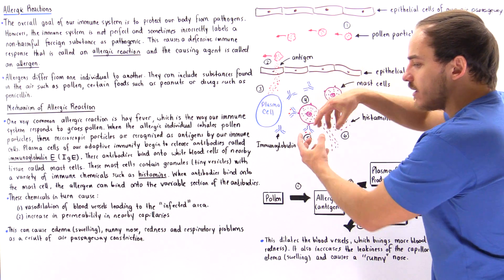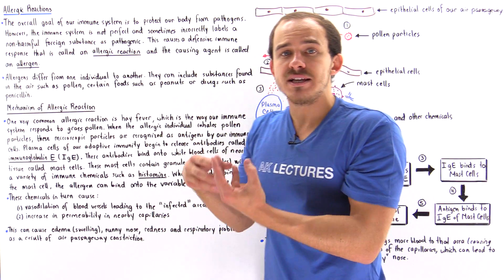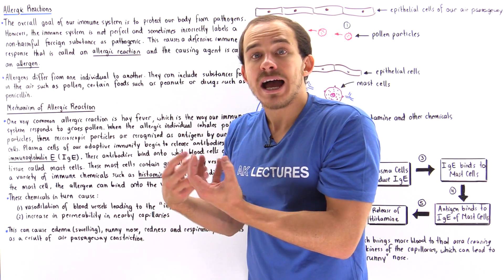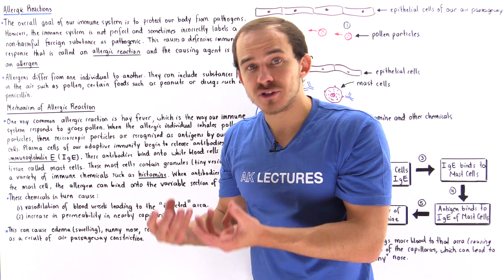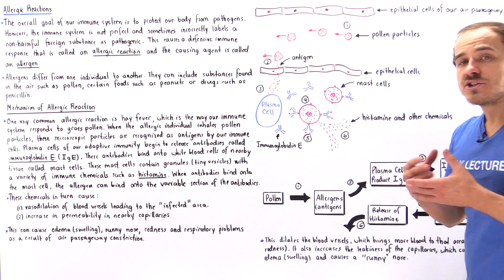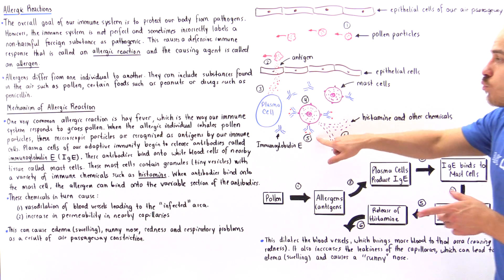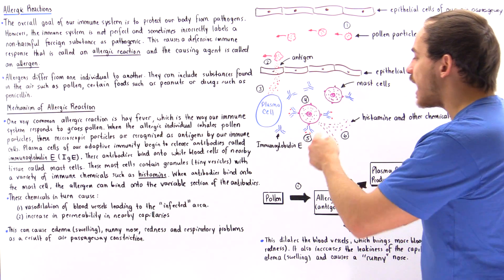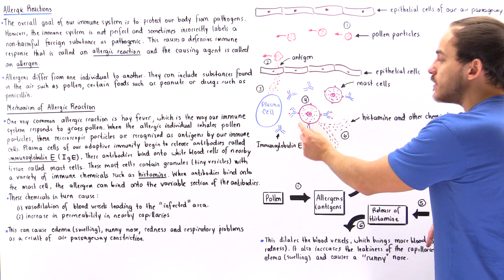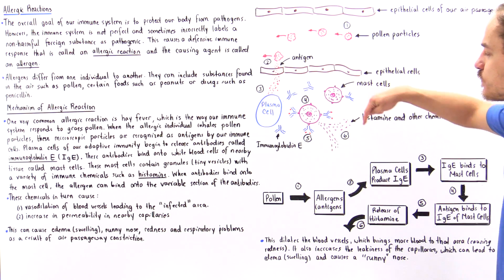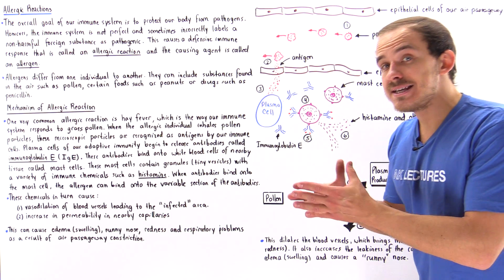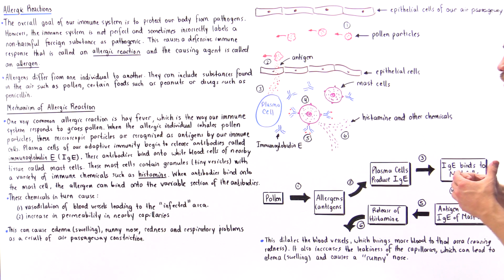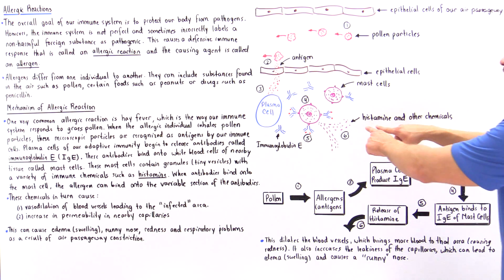And once this binding takes place, these mast cells in the cytoplasm contain these granules, these tiny vesicles that carry special chemicals, special immune chemicals such as histamine. And once the antigen binds onto the antibody found on the membrane of these mast cells, these mast cells release these vesicles, these granules, and in turn release the histamine and other immune chemicals.